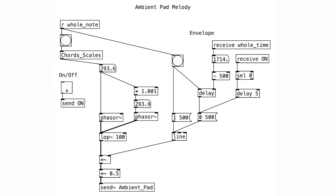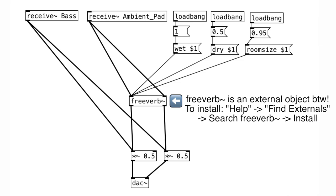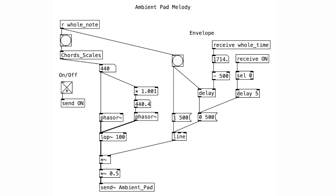Let's take a look at the melody next. This button is triggered at the start of every measure, triggering an object which outputs a random frequency. That random frequency is then used for the sawtooth waves. These sounds go to the reverb and then finally to the DAC.